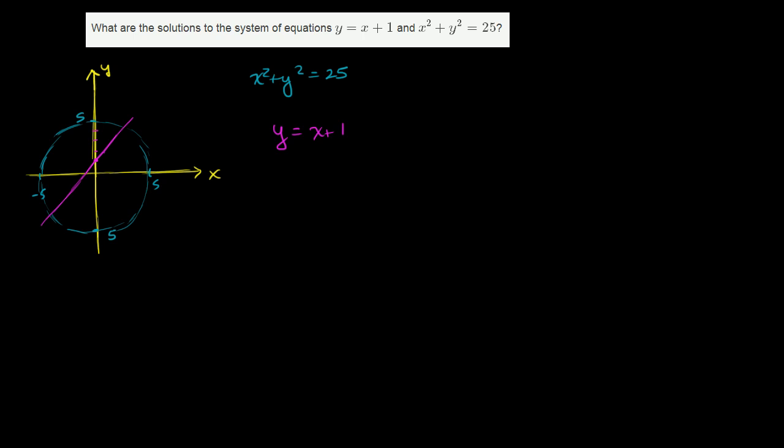So when we're looking for the solutions, we're looking for the points that satisfy both. The points that satisfy both are the points that sit on both. So it's that point. Let me do it in green. It's this point, and it's this point right over here.